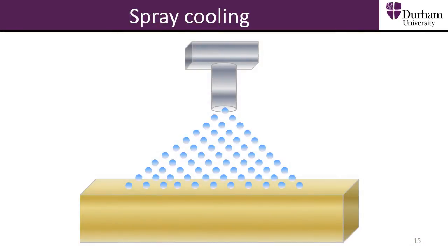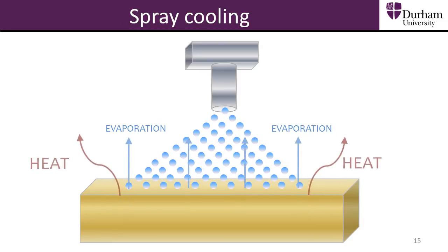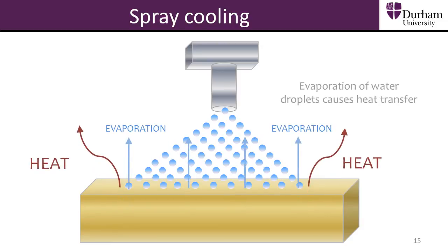In spray cooling, water is divided into fine droplets, fired at hot surfaces upon which they evaporate, transferring heat away from the surface. Spray cooling is very sensitive to a number of droplet impact parameters, such as impact velocity and angle, surface roughness, and droplet size. By controlling the droplet impact, the efficiency of cooling can be maximised.